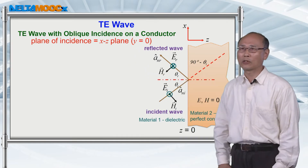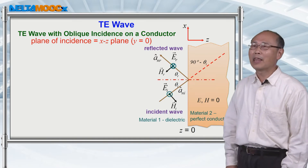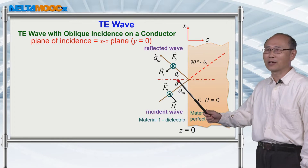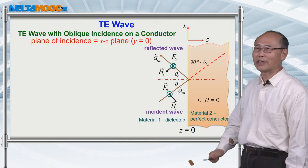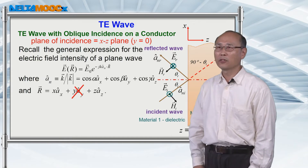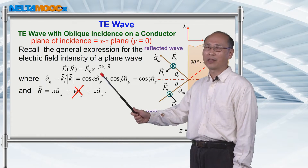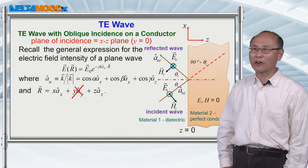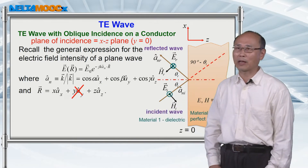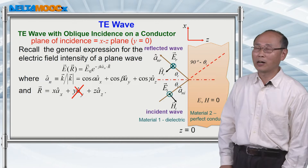Let's look into the TE wave, where the electric field is transverse to the plane of incidence. The plane of incidence is defined through the wave vector and the surface normal vector. In this configuration, the plane of incidence is the xz plane, defined as y equal to 0. The first step is to write down all the field expressions. For a harmonic plane wave, the wave vector a_n is written as cosine α a_x plus cosine β a_y plus cosine γ a_z, where cosine α, cosine β, cosine γ are the direction cosines.